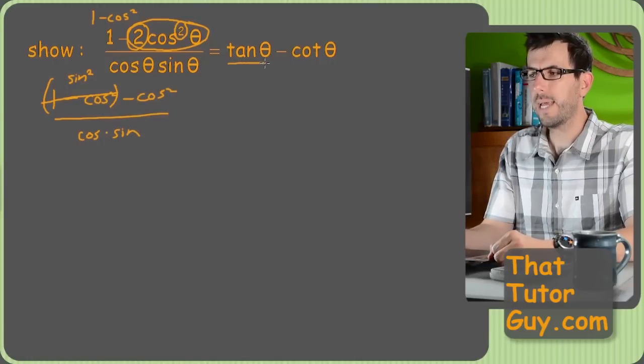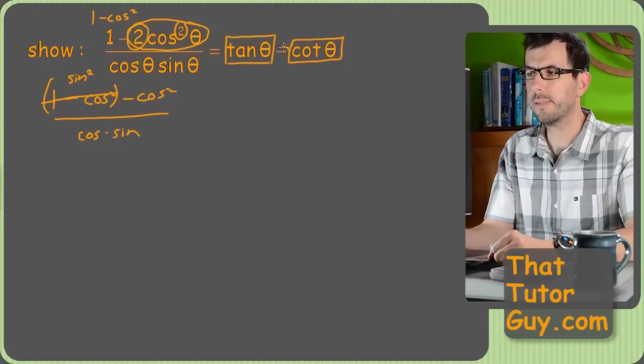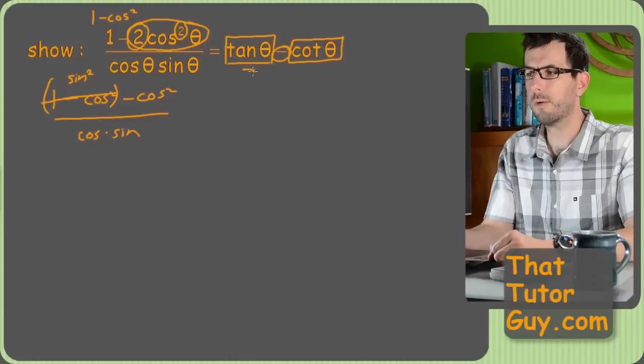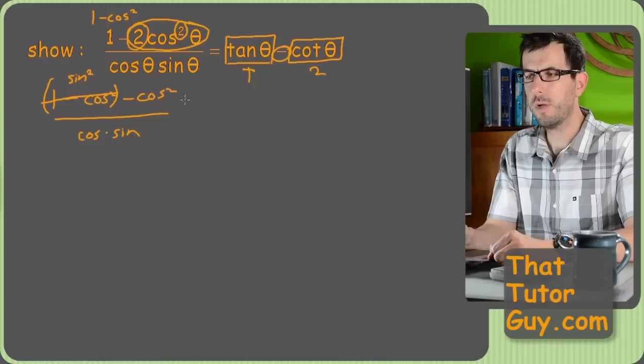You know what? The next thing I notice is that on the right side here, I have two separate terms. There's a tangent, and there's a cotangent, and they're separated by a minus sign, which means there are two separate terms, term one and term two. But on the left, I just have one giant fraction, which is basically one term.